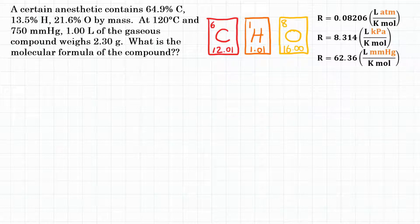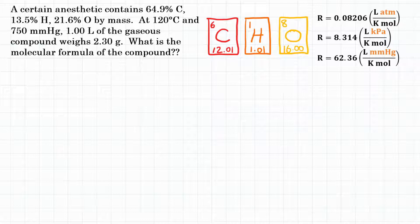To solve this problem, we are going to first use the ideal gas law to calculate the number of moles. Then, using the 2.30 grams with that number of moles, we can calculate the molar mass. Separately, we're going to use those percentages to calculate the empirical formula and then the molar mass of that empirical formula. Comparing those two molar masses will give us the molecular formula.